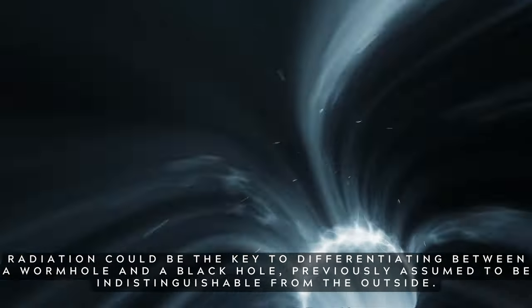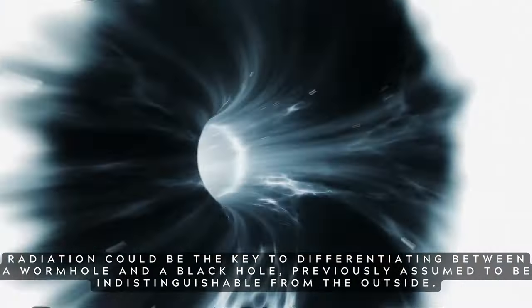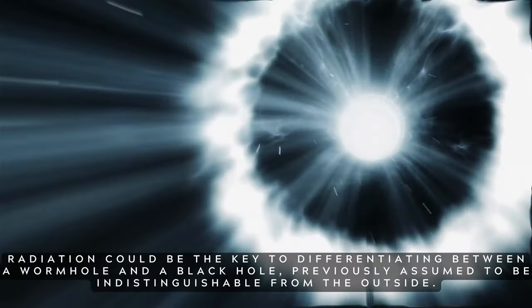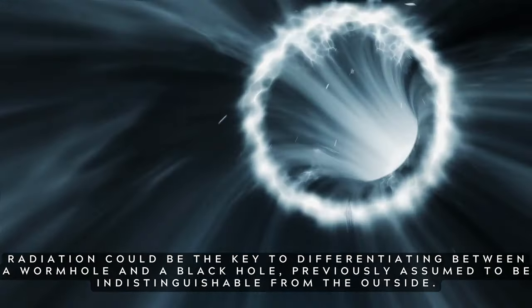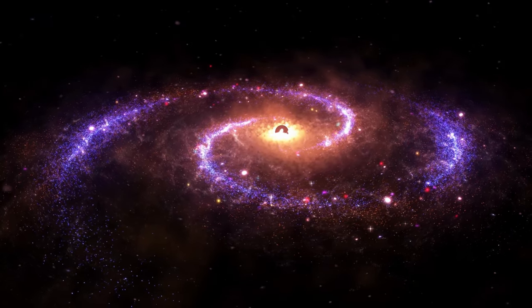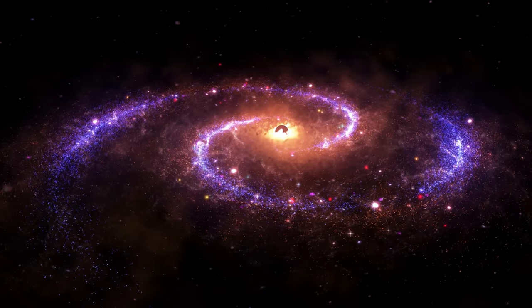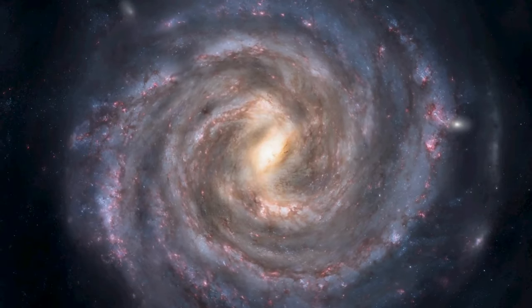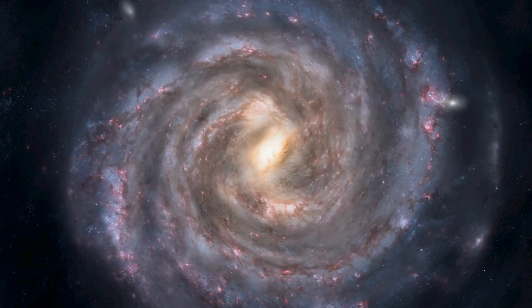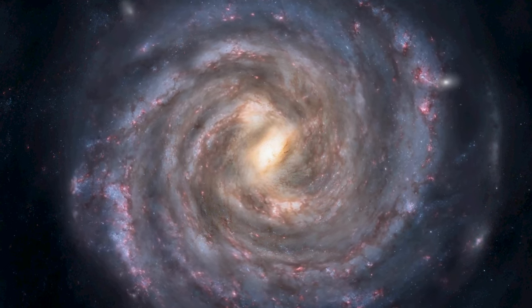Black holes should produce fewer gamma rays and eject them in a jet, while radiation produced via a wormhole would be confined to a giant sphere. Although the kind of wormhole considered in this study is traversable, it would not make for a pleasant trip because it would be so close to the center of an active galaxy. The high temperatures would burn everything to a crisp.